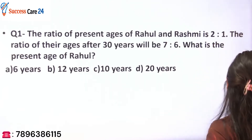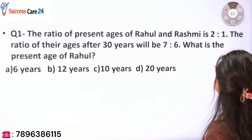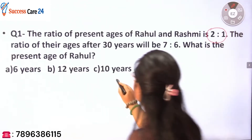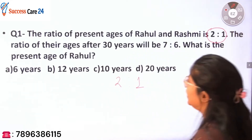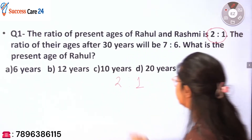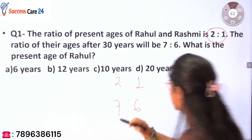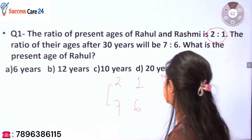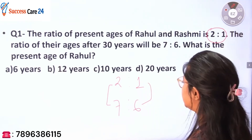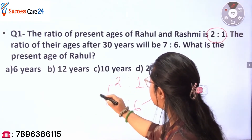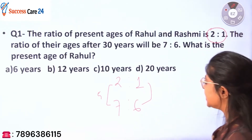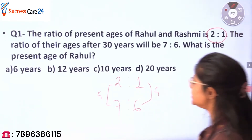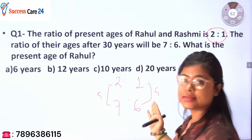The first ratio is given as 2 is to 1, and after 30 years the ratio is given as 7 is to 6. For the short trick, check the difference of ratios vertically: from 2 to 7 there is a difference of 5 parts, and from 1 to 6 there is also a difference of 5 parts. So vertically the ratio difference is the same.